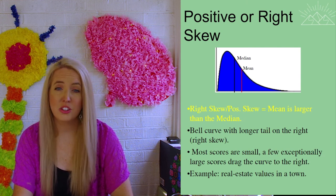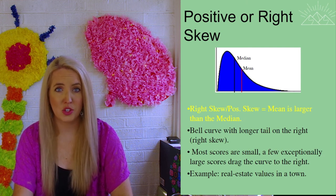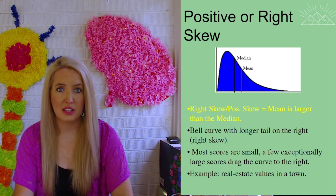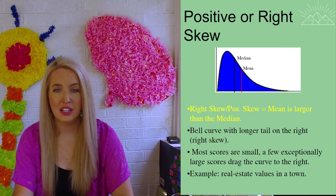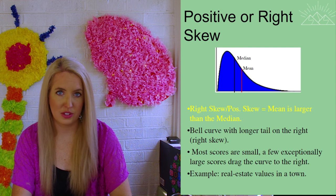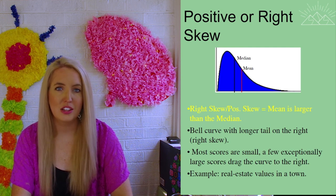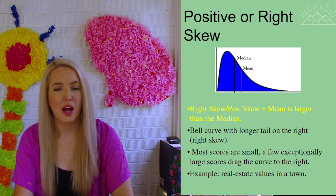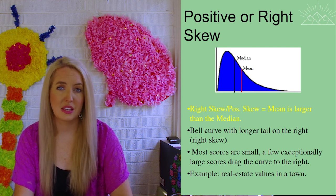and then someone decides to come in and build a giant mansion that is 10 times the price of a home in this town, because this one home has such a high value to it, the average home price is going to increase in our town, even though most of the houses, the median score is going to stay relatively the same. And that is why we might see this positive or right skew where we see the mean become higher than the median.